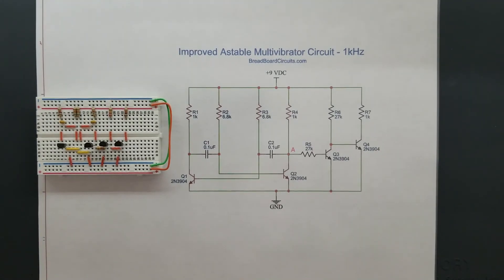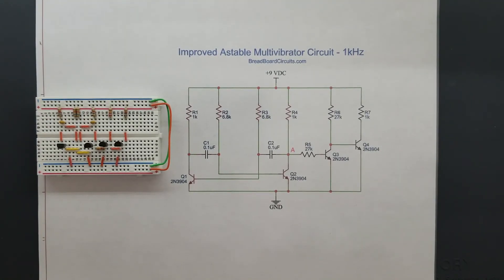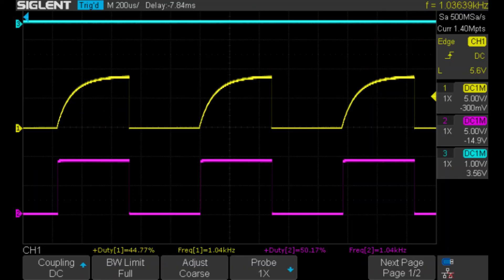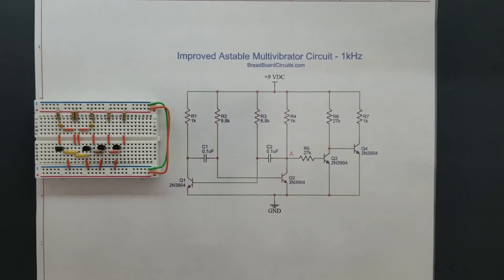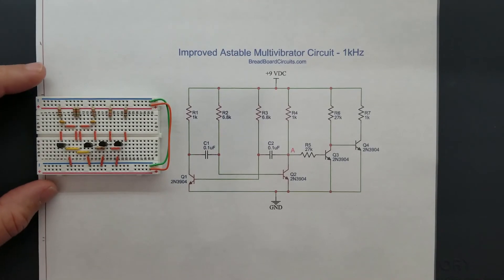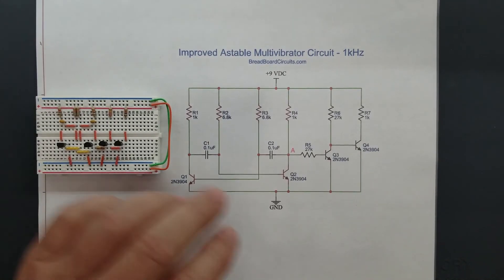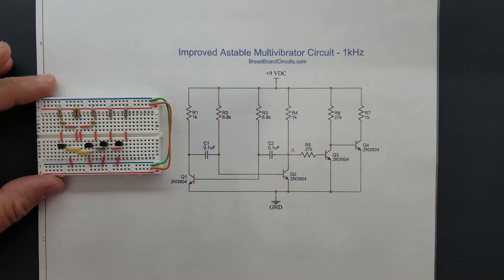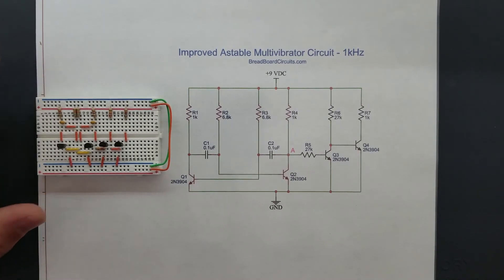So here's an image of our raw input waveform in yellow and our improved output waveform in purple. If you want to build this circuit, there's a schematic for it. And here is the parts list right here.